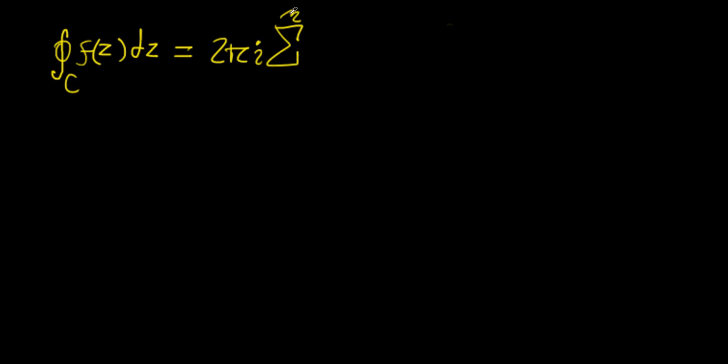I'm going to use capital N here. So let's have the sum from j equals 1 to N of the residue of f(z) evaluated at some pole z_j.